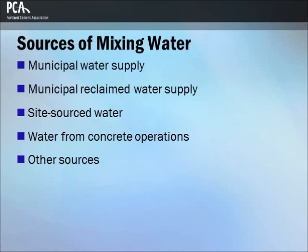When considering water quality in concrete production, it is important to account for all sources of water in the mixture. By far the greatest volume of mixing water in concrete is batch water, which may come from a municipal water supply, a municipal reclaimed water supply, a site-sourced water, or water from concrete production operations. Other sources of batch water include free moisture on aggregates, ice, job site addition by the truck operator, and liquid chemical admixtures.